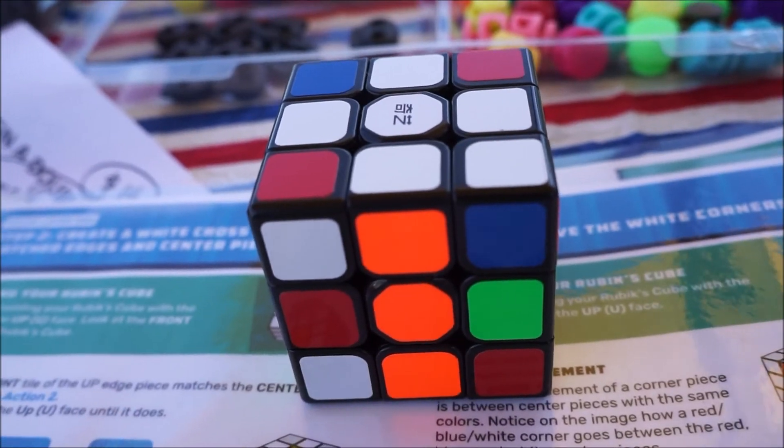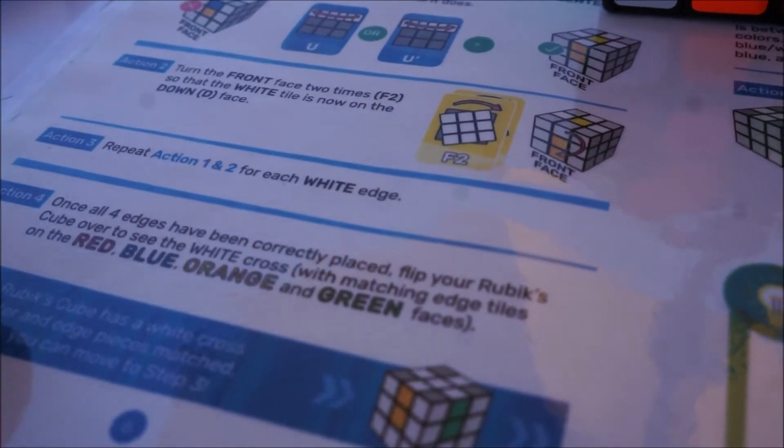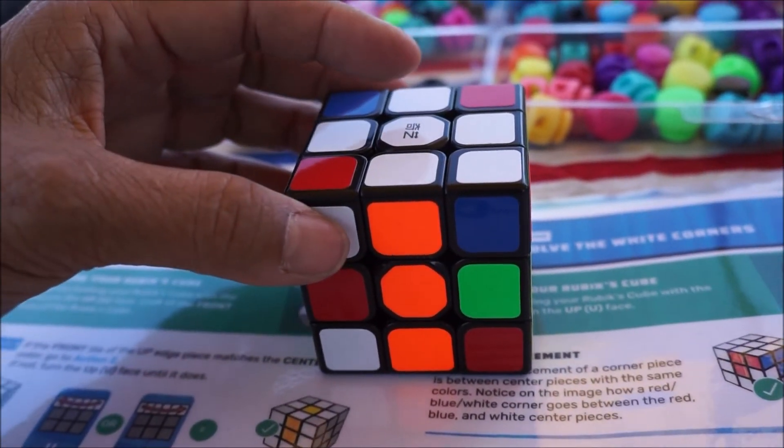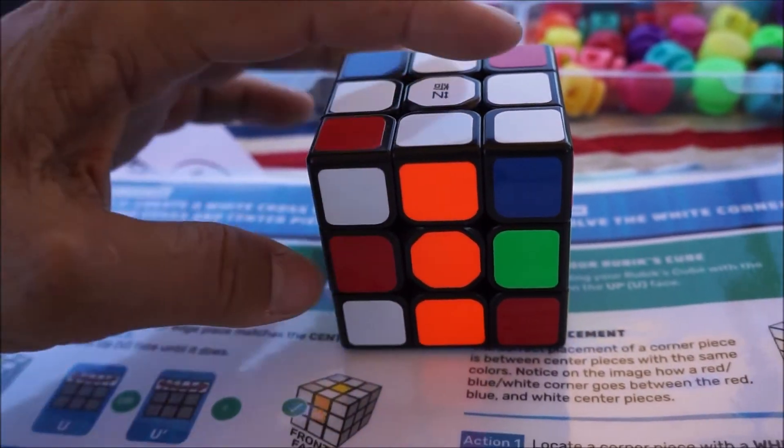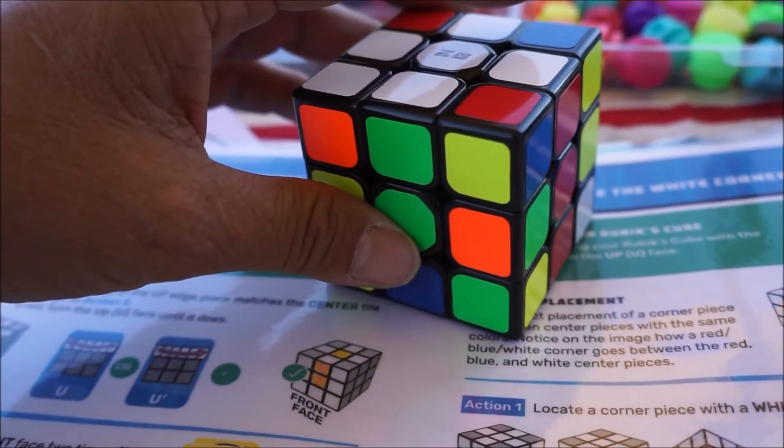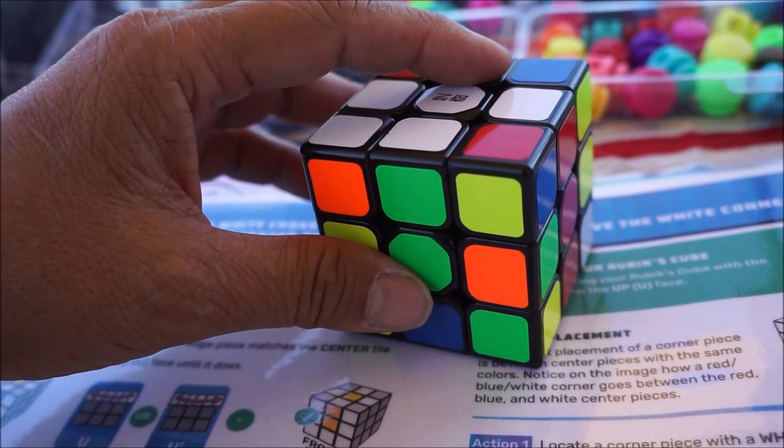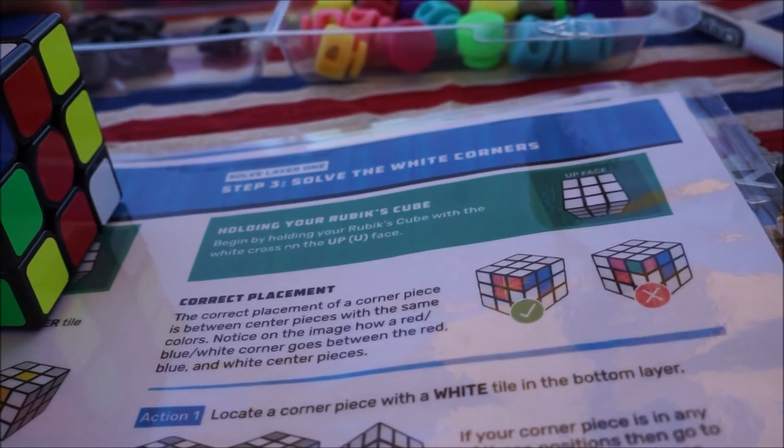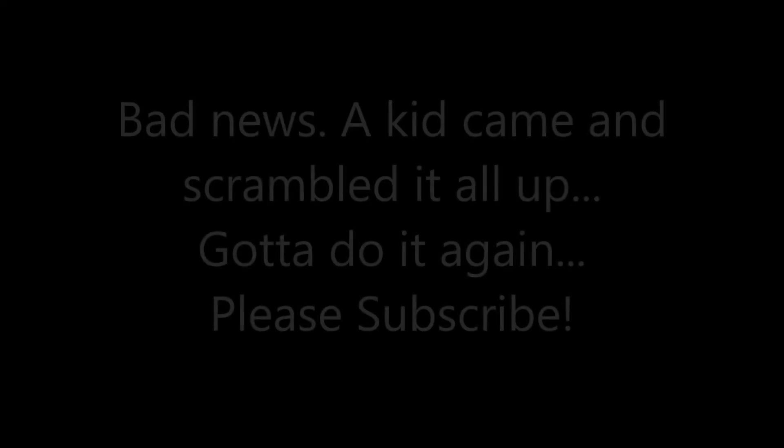Okay, so action four in step two of layer one. Once all four edges have been correctly placed, you should see the white cross with matching edge tiles on all four sides. We can move to step three. Solve the white corners.